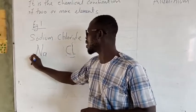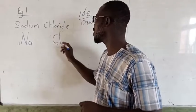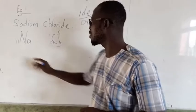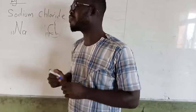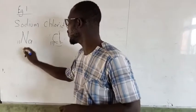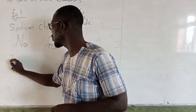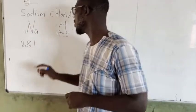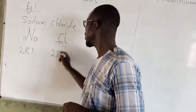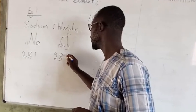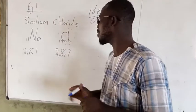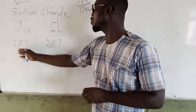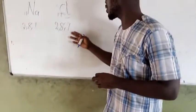So chlorine and then sodium here. Now let's look at the atomic number. Sodium is 11, and then chlorine is 17. We'll look at our valence. Our valence for sodium is 2,8,1. And then chlorine is 2,8,7.